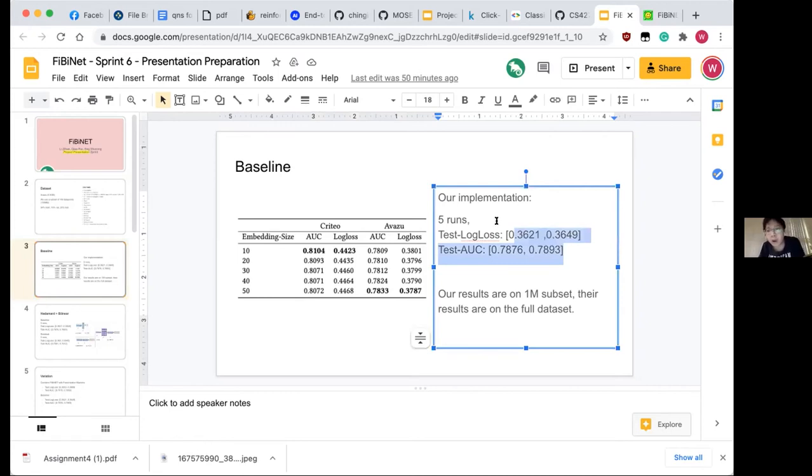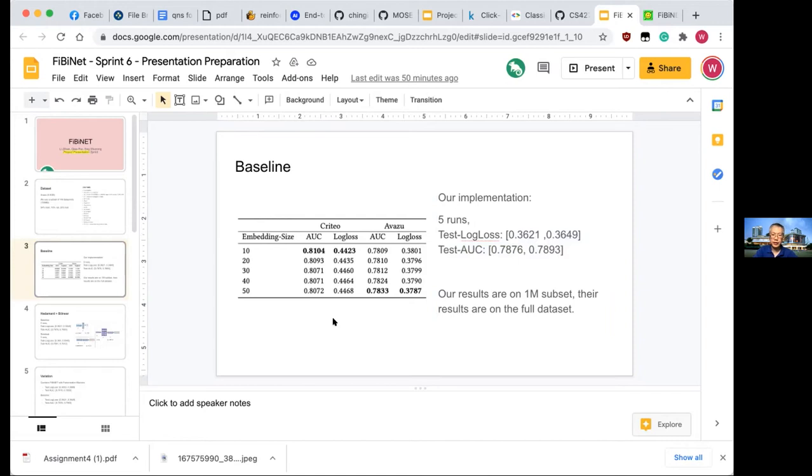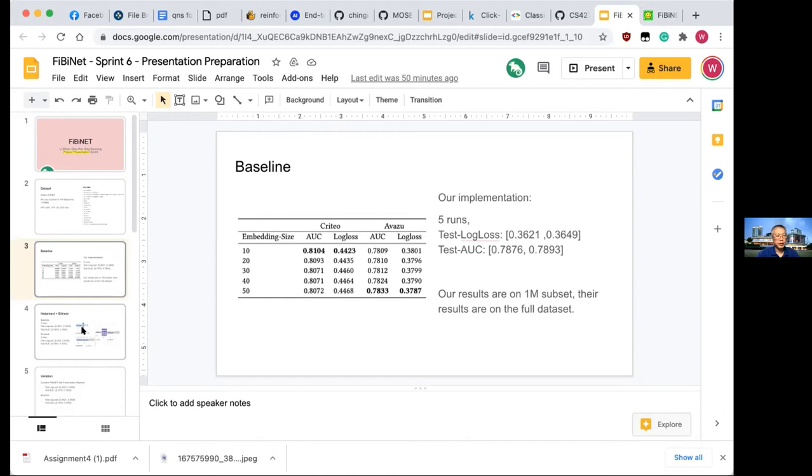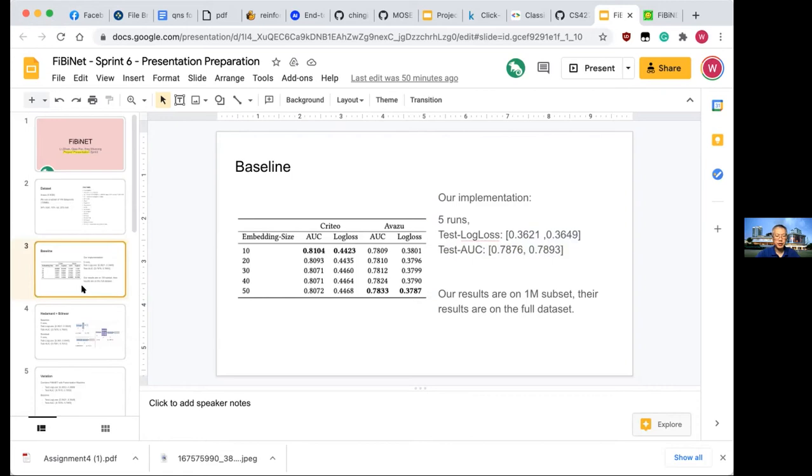For the implementation we are working with, we established some baselines. For the figures quoted in the paper, they achieved 0.78 for the area under the curve and 0.38 for the log loss. Whereas on the other hand, for us, when we do the same thing for the vanilla implementation, we also got a similar set of results. In fact, slightly better. But of course our results are based on a subset, whereas the results are on the full dataset.